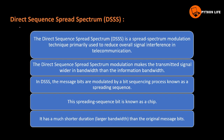Now, what is Direct Sequence Spread Spectrum? DSSS is a spread spectrum modulation technique primarily used to reduce overall signal interference in telecommunication. It is used mainly to reduce signal interference in telecommunications.